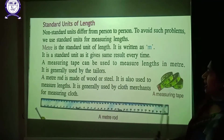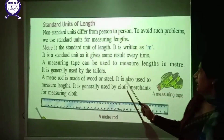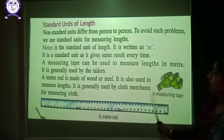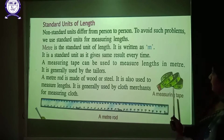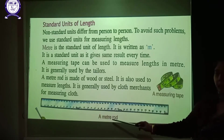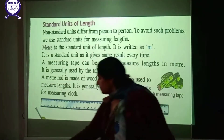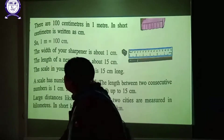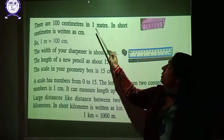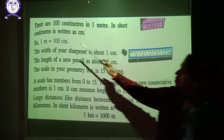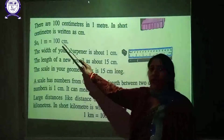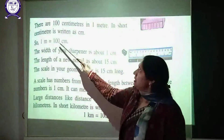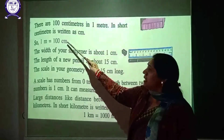A meter rod, made of wood or steel, is also used to measure length. It is generally used by cloth merchants for measuring cloth. There are 100 centimeters in 1 meter. We write meter as 'm' and centimeter as 'cm'.